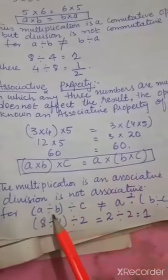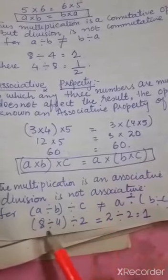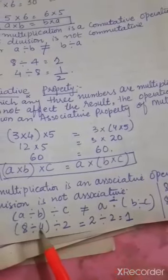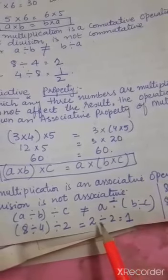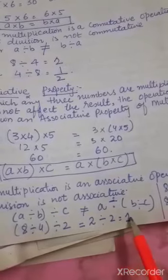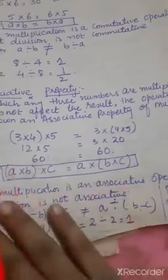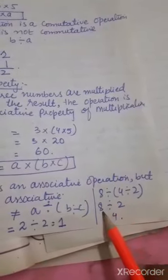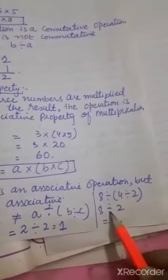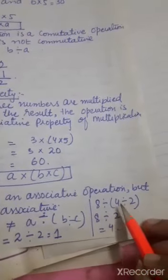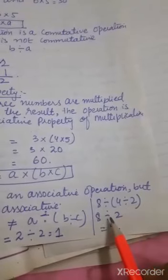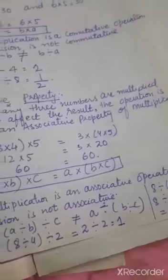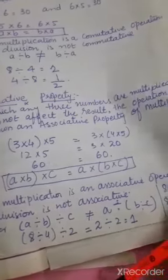Both sides equal 60. For division: a divided by b, divided by c. For example, 8 divided by 4, divided by 2 equals (8 divided by 4) divided by 2 equals 2 divided by 2 equals 1. But 8 divided by (4 divided by 2) equals 8 divided by 2 equals 4. Both sides are not equal, so division is not an associative property.